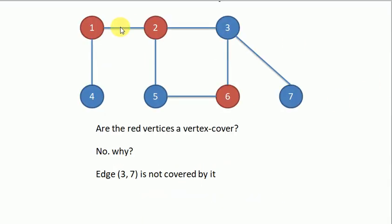Now we have chosen vertices 1, 2, and 6. We can see that edges 1-4, 1-2, 2-5, 5-6, 3-6, and 2-3 are covered. But the edge 3-7 is not covered, so it is not the vertex cover.